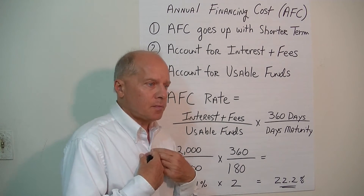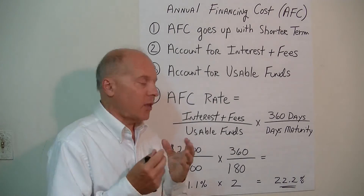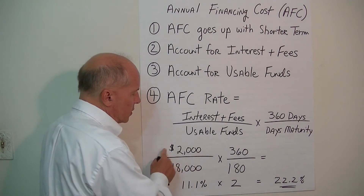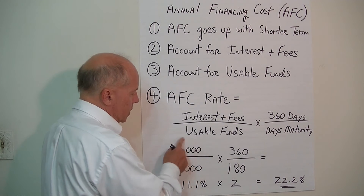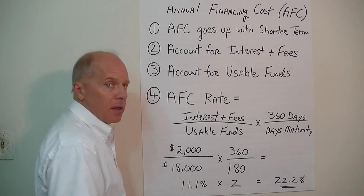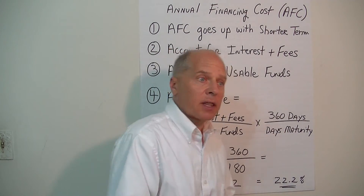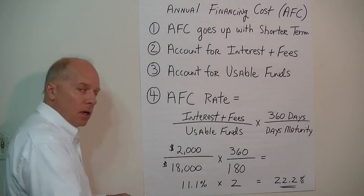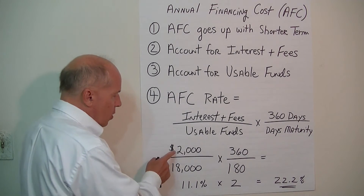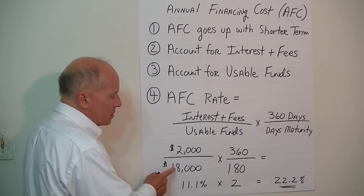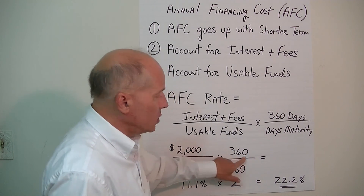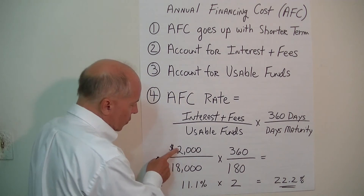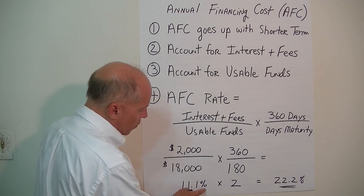Well, it turns out we have interest, fees, and other things to pay that add up to $2,000 for this 6-month, $20,000 loan. We put that in the numerator. On top of that, the usable funds that the bank gives us are not $20,000 — they are $18,000. So we have $2,000 divided by $18,000, which is 11.1%. The banker's year is 360, and for a 6-month loan it's 180 days.